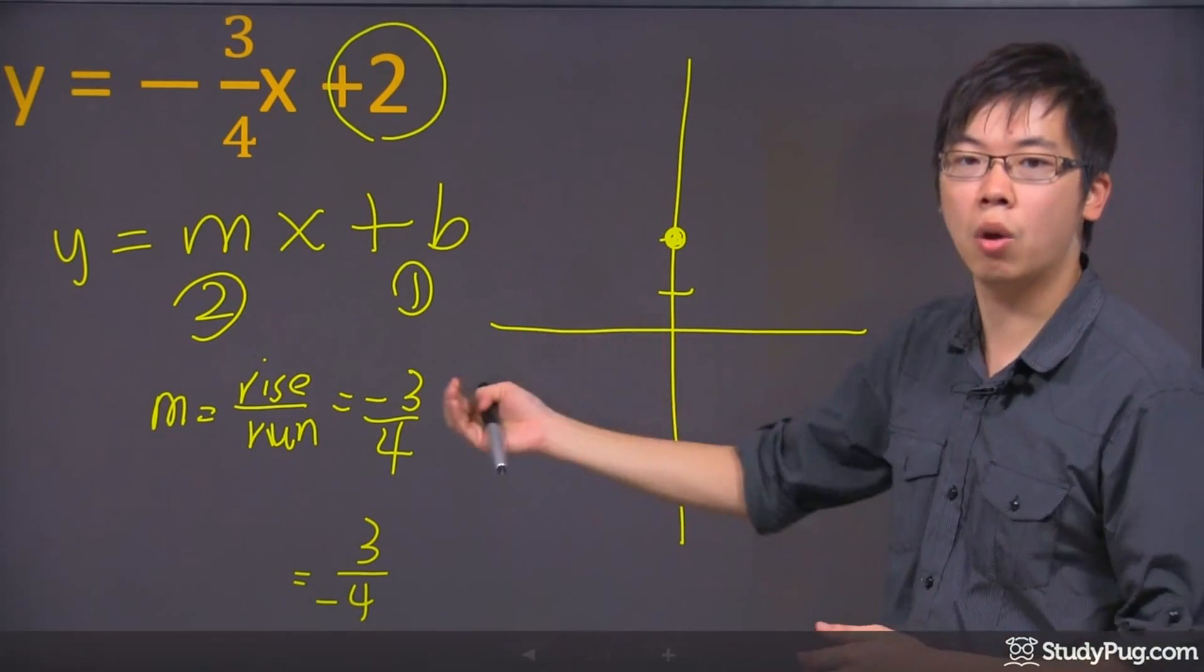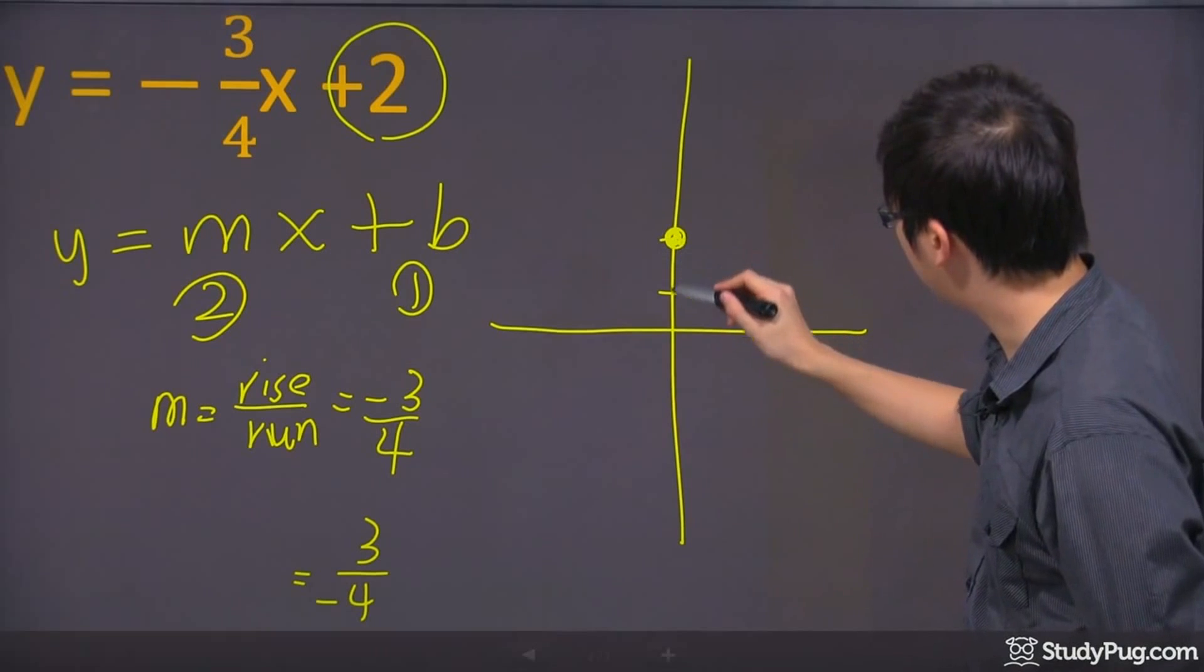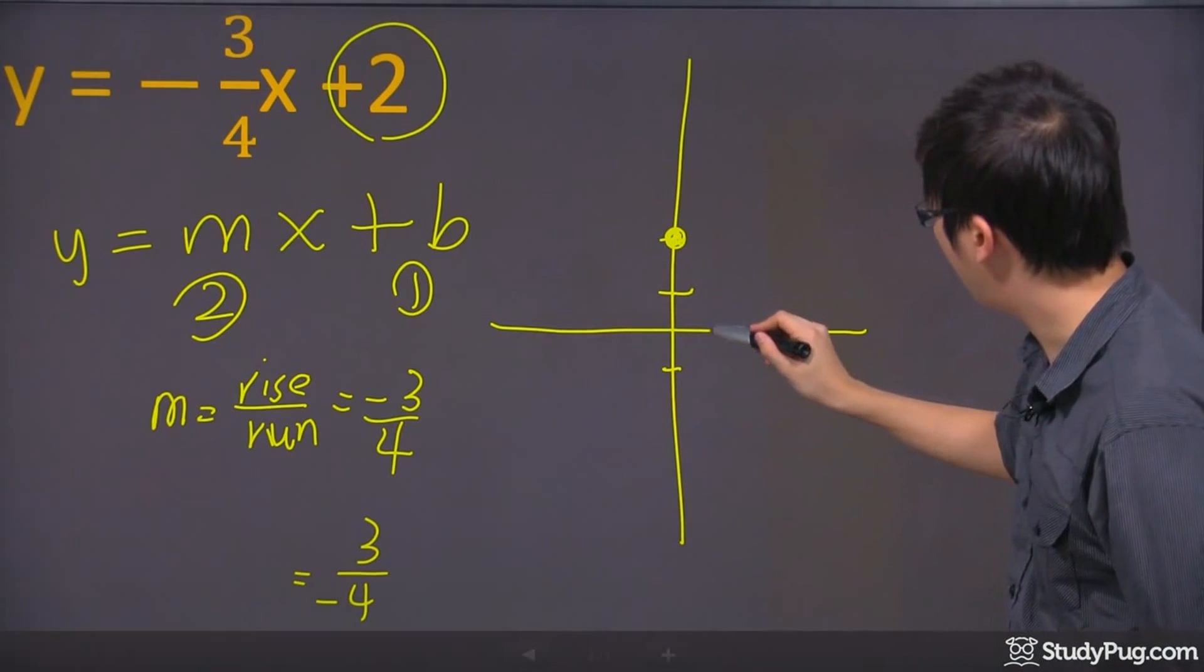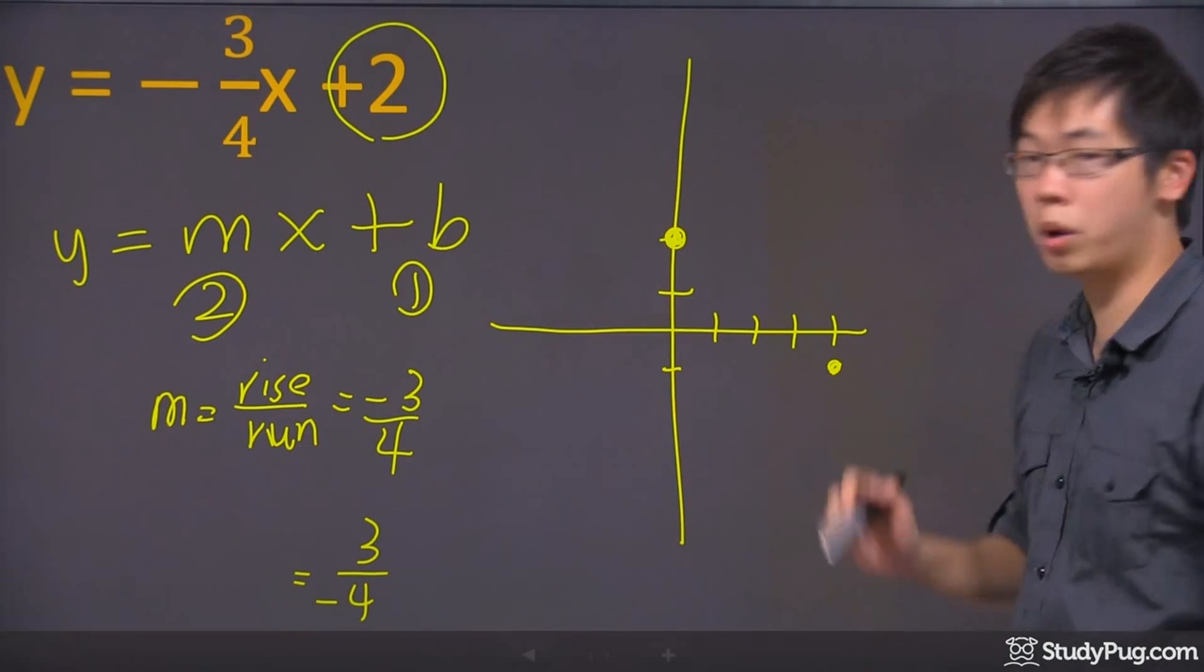So I'm going to go down 3, that's 1, 2, 3, and then 1, 2, 3, 4, and here's my next point.